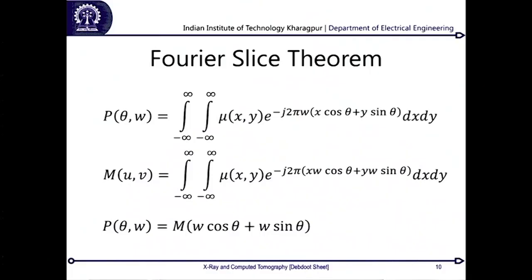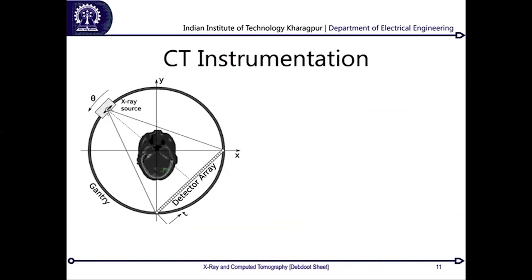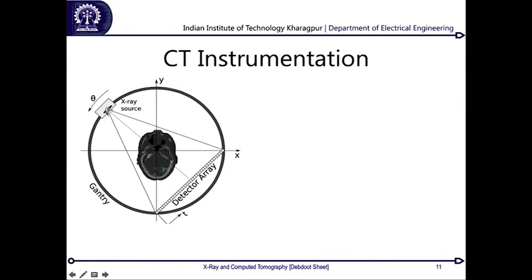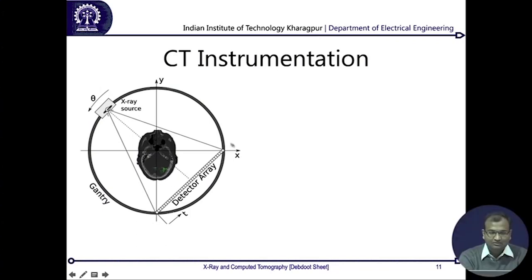Now that we know the math, we look at CT instrumentation. Since the X-ray produces a divergent beam rather than a single focused beam, we place an array of detectors — each capturing a different line equation — to acquire the full projection. On a 2D cross-section, we rotate the source-detector array continuously to acquire multiple projections at different angles. From each projection we backtrack and iteratively reconstruct the full object. This is CT reconstruction.